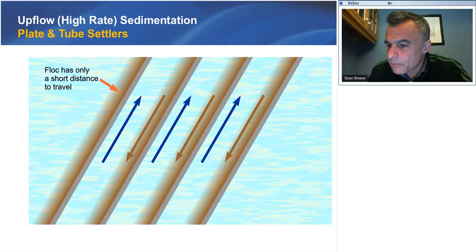Here's a schematic illustration of a lamella plate or tube settler and how it works. The flocculated water comes up between the plates. The floc then only has to settle the short distance between the plates, slides down the plate, and gets collected in the bottom of the basin. You're really defining the hydraulic flow and enhancing the opportunity for the floc to settle and be separated from the water.